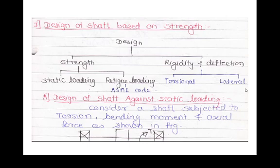For the strength category, we use the equation M/I = σ/y = E/ρ. For rigidity, we use the equation T/J = τ/r = Gθ/L. Rigidity covers torsional rigidity and lateral rigidity.